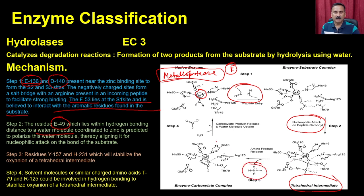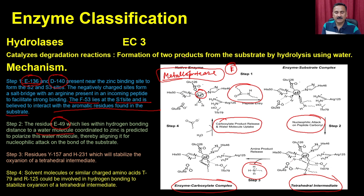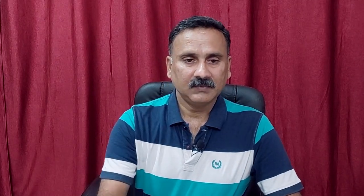Once the peptide enters, a nucleophilic attack occurs on the peptide carbonyl bond, forming a tetrahedral intermediate stabilized by active-site residues of the metalloprotease. This cleaves the peptide bond, releasing the product as an enzyme-carboxylate complex. The carboxylate and water molecule are then released, restoring the native conformation ready for a new substrate molecule.